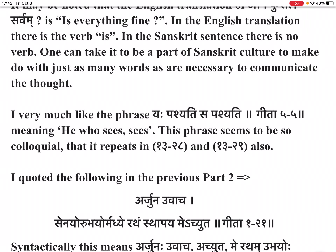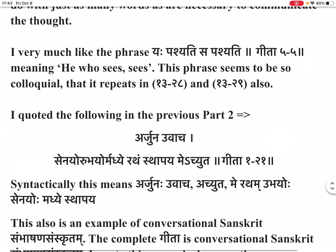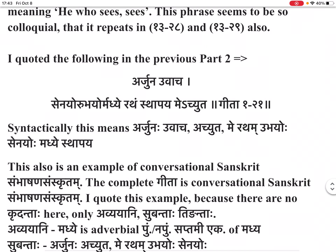Earlier, in previous Part 2, I quoted the following: 'Arjuna uvaca — senayor ubhayor madhye ratham sthapaya me achuta' — Gita 1-21. Syntactically, this means: Arjuna uvaca — achuta, me ratham ubhayoh senayoh madhye sthapaya. This also is an example of conversational Sanskrit — Sambhasana Sanskrit. The complete Gita is conversational Sanskrit. I quote this example because there are no kridantaha, which we have not studied so far.